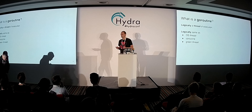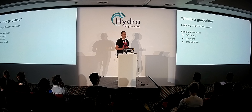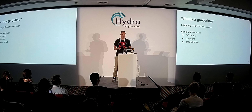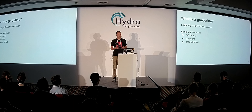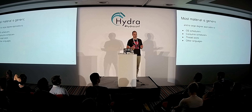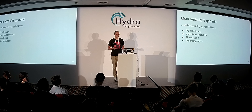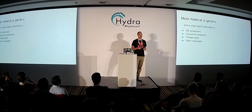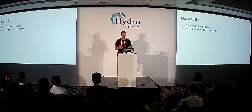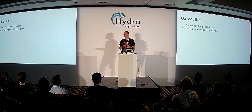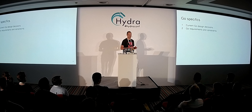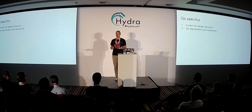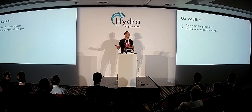This talk is about the Go language. Go has built-in support for concurrency, and the main primitive for concurrency is called the GoRoutine. Logically, a GoRoutine is a thread of execution — the same as an OS thread, a coroutine, or a green thread. Most material here is somewhat generic and applicable to OS schedulers, coroutine schedulers, and other languages, so hopefully you'll find it useful even without specific interest in Go. However, there are some Go-specific aspects — I'm talking about what is currently implemented, and Go imposes certain requirements and constraints on our design decisions.